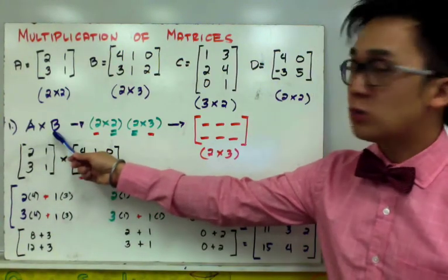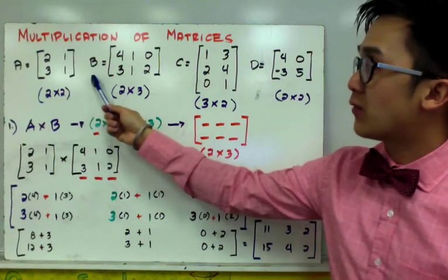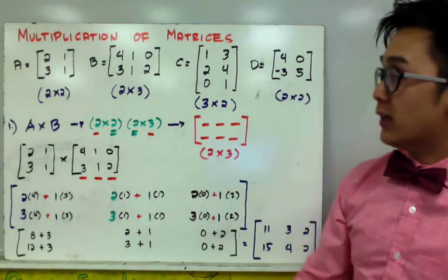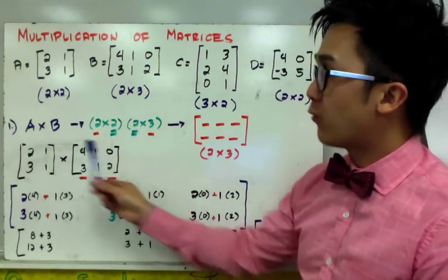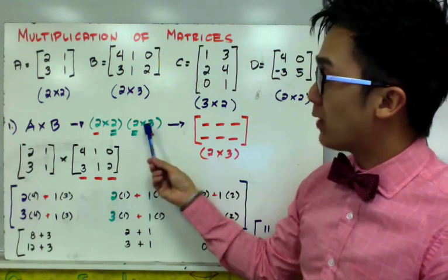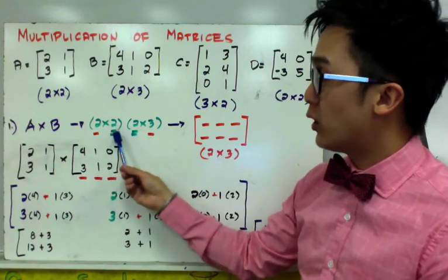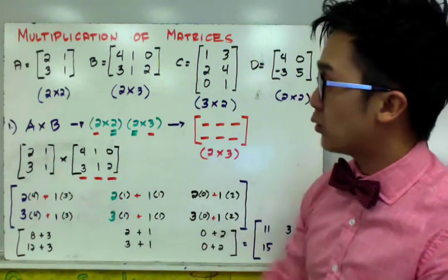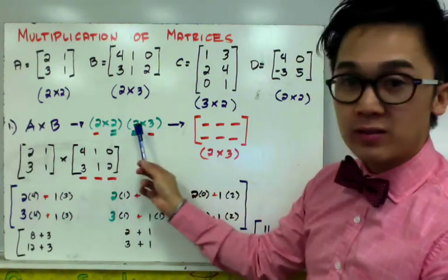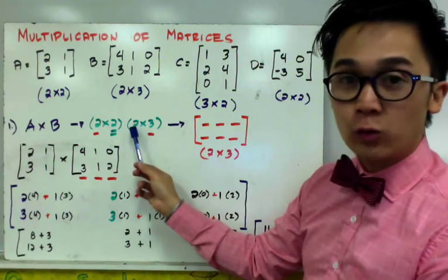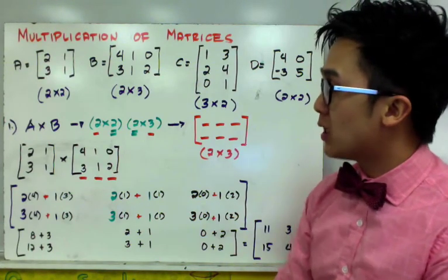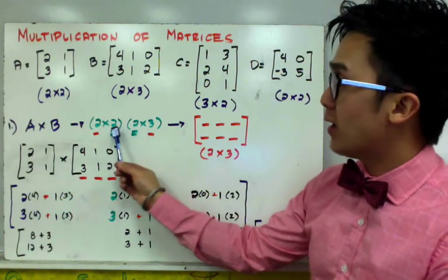Let's have A times B. To multiply matrix A and B — if this were addition and subtraction, it's not possible because they have different orders. But in multiplication, it is a different story. First, to verify if we can multiply A and B, just write out the order of matrix A and matrix B. Since matrix A is a 2 by 2 and matrix B is a 2 by 3, looking at the inner value of our two parentheses, since they are the same, therefore we can multiply A and B.